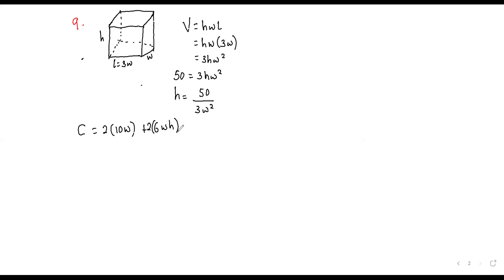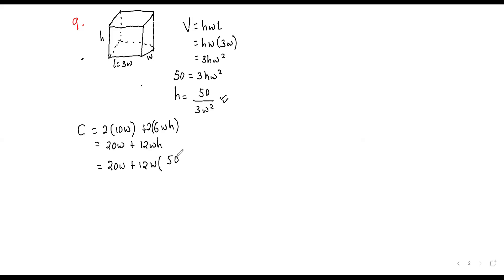The sides are attached to the width and the height. So the cost function simplifies to 20W² (for top and bottom at 10 each, area 3W²) plus 12W for the sides at cost 6. We substitute the expression for H = 50/(3W²) into the cost function, getting 20W² + 12W × 50/(3W²).